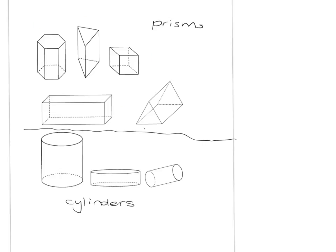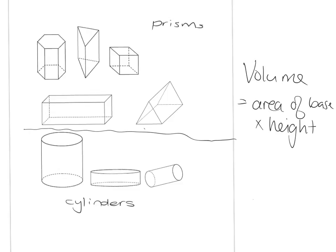Cylinders are really the circular version of prisms — they've got a circle at the top and at the bottom, and these circles are parallel to each other and exactly the same size, congruent and parallel. For both prisms and cylinders, the volume is the area of the base multiplied by the height of the prism or the cylinder.